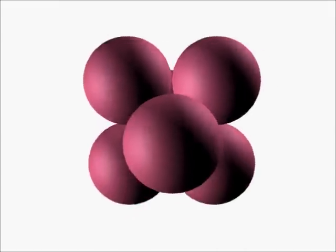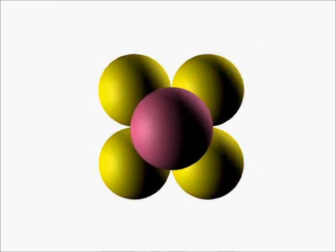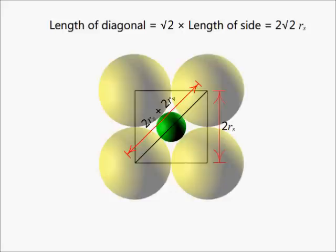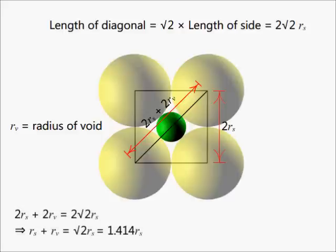For the octahedral void, if we join the centers of the four spheres, we get a square of side 2Rs. The length of the diagonal of this square equals 2Rs + 2Rv, where Rv is the radius of the void. Therefore, Rs + Rv = 1.414Rs, or Rv/Rs = 0.414.